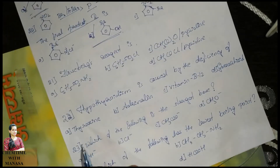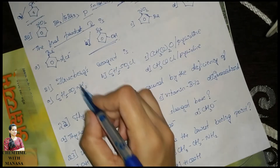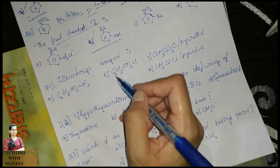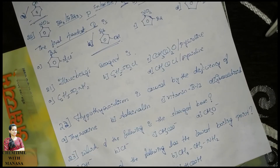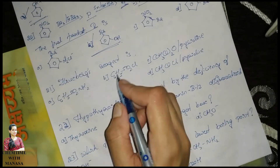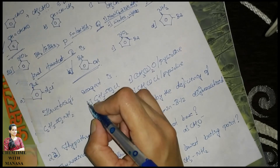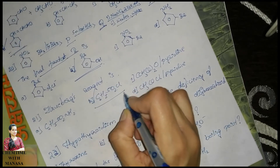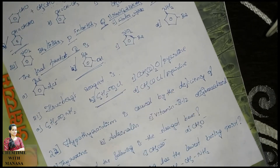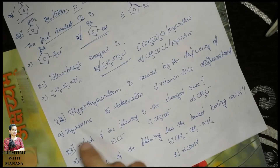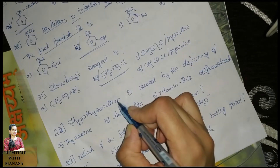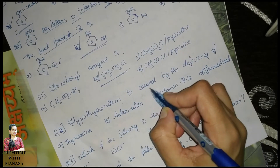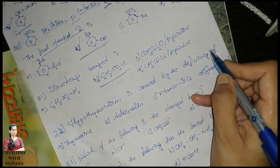Next: Hinsberg reagent is C6H5SO2Cl — a straightforward question with no confusion.